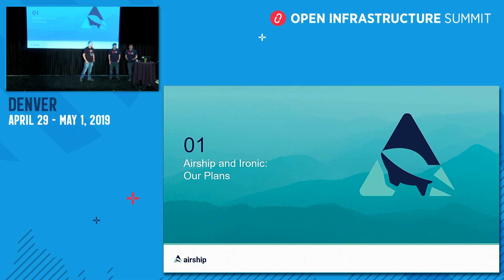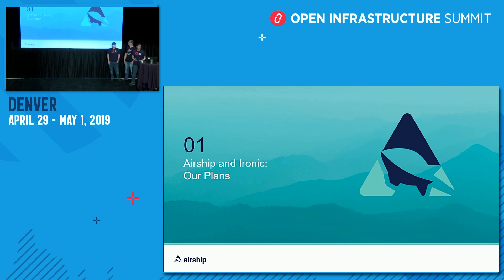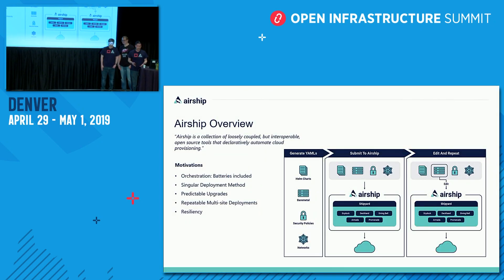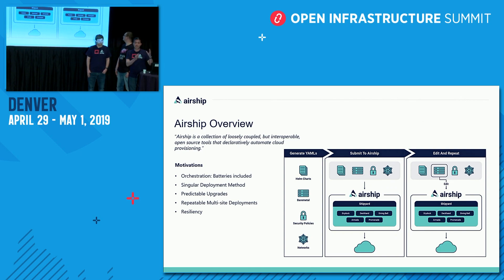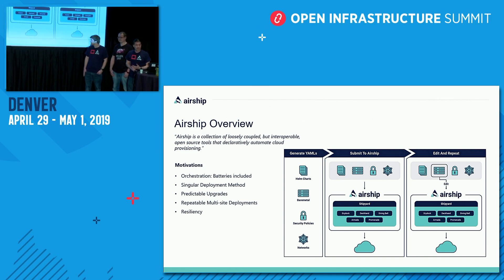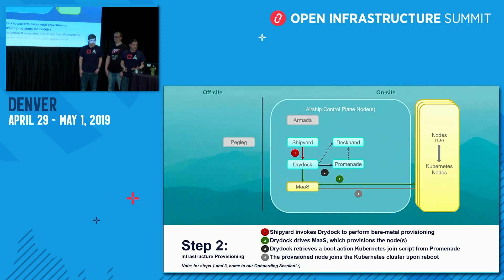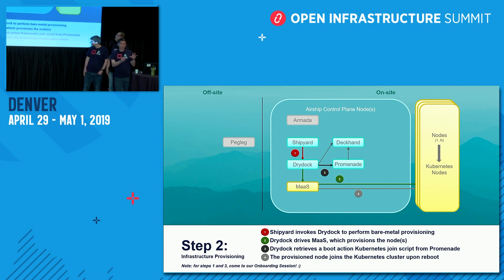Airship for a long time has wanted to adopt Ironic as its bare metal provisioning component, and our plans for how we want to integrate Ironic have shifted recently. Airship is a platform that takes YAML documents and turns them into clouds. These YAML documents represent things like overrides for Helm charts, network policies, security, and declarative definitions of bare metal servers. The way that Airship takes YAML files that define bare metal servers and turns them into actual running bare metal servers is shown up on the screen here.